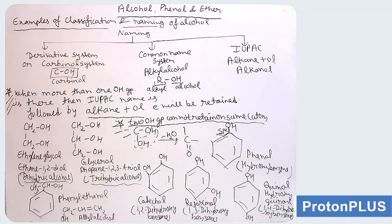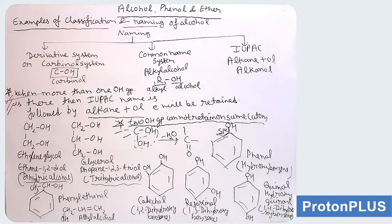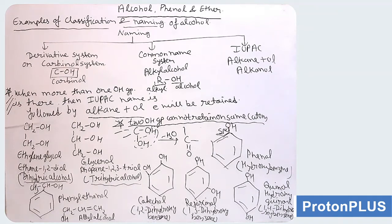Children, remember one more thing: two OH groups cannot be on the same carbon atom. As we have seen with gem dihalide and vicinal dihalide, it is not possible for two OH groups to be placed on the same carbon atom. These two OH groups are large groups, so they cause steric hindrance for each other and ultimately lead to removal of a water molecule (H2O), forming a carbonyl group, that is C double bond O. So two OH groups cannot remain on the same carbon atom.